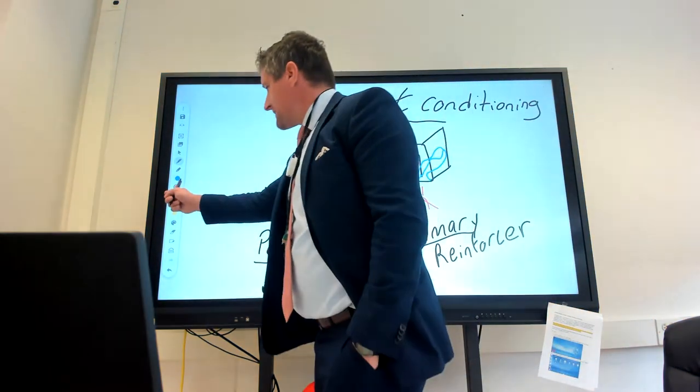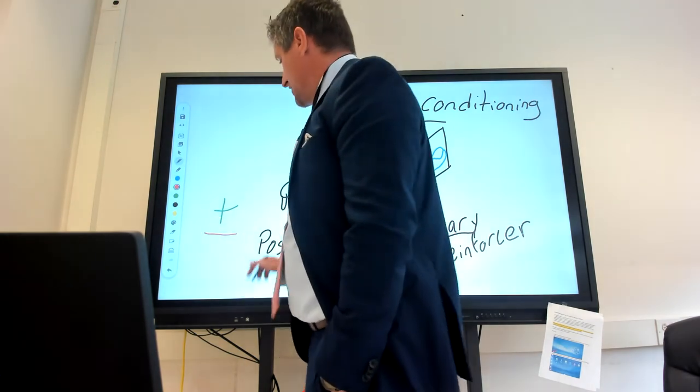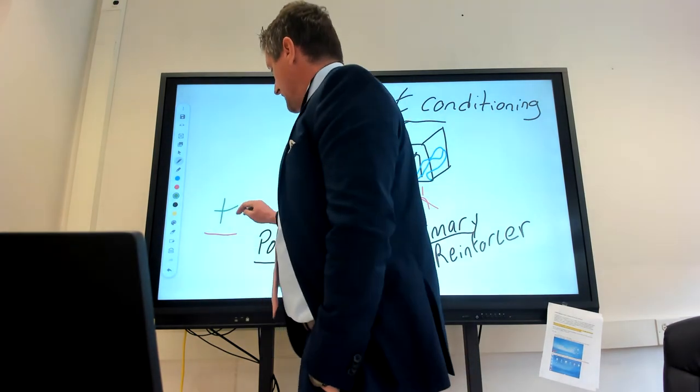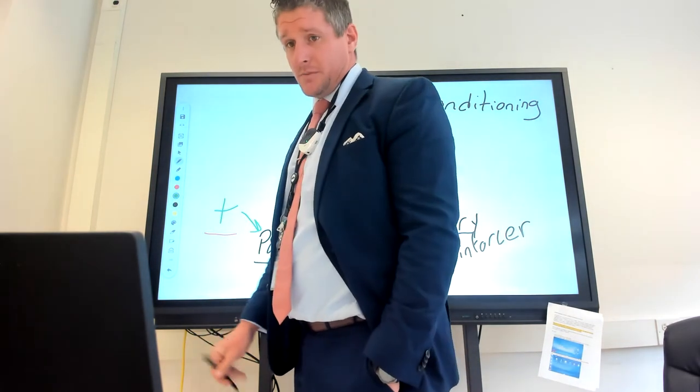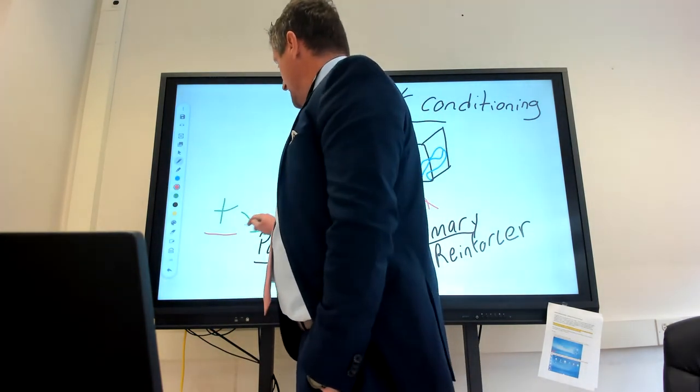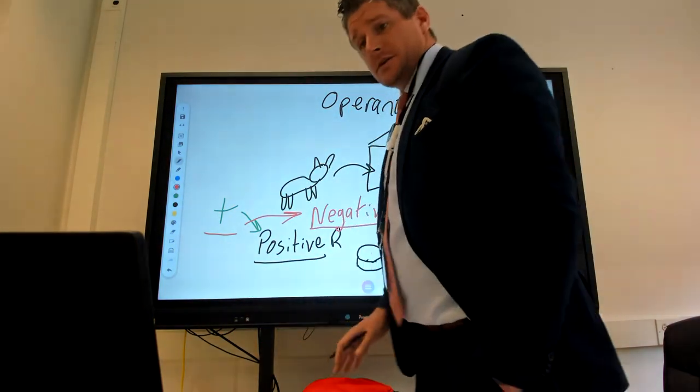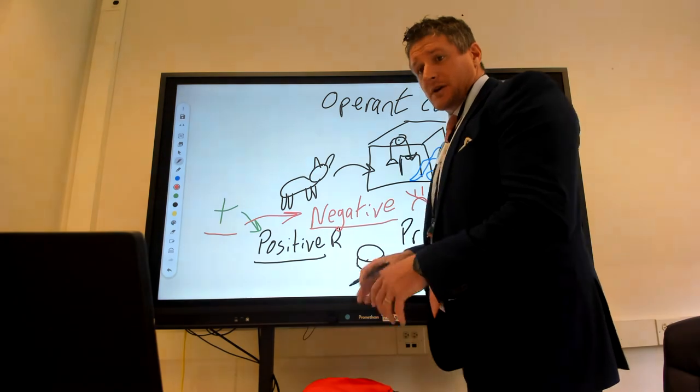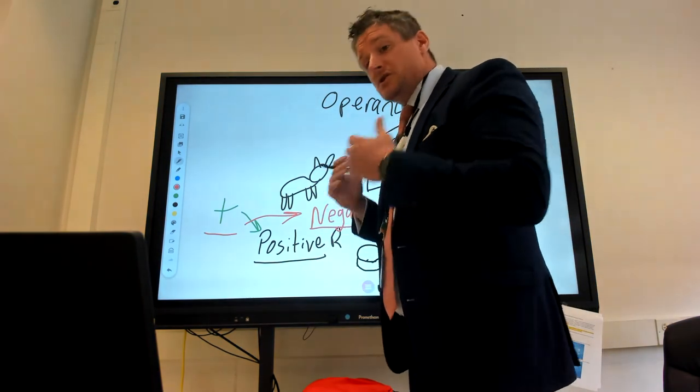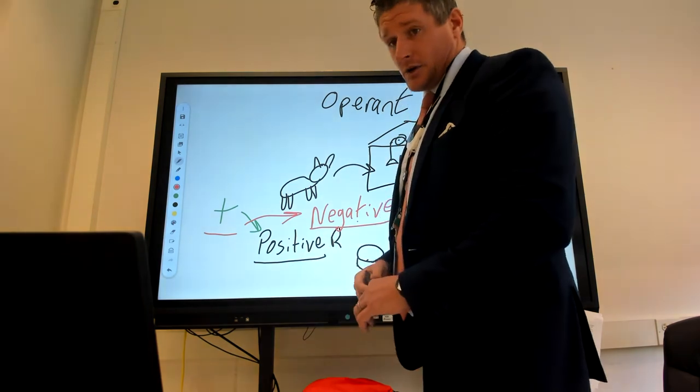So think of it like in math class. Addition or subtraction. The positive reinforcer is something that's being added to reinforce your behavior and make you feel better. The subtraction is the negative. We're taking away something you don't like in order to reinforce your behavior. So both of these are reinforcing your behavior, and both of them are making your situation better, whether it's by taking away a bad thing or adding a good thing.